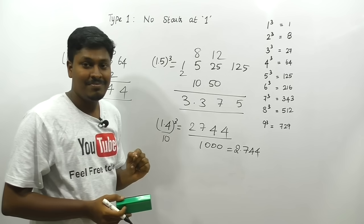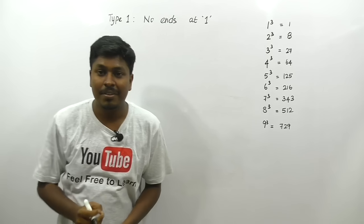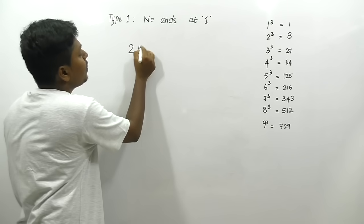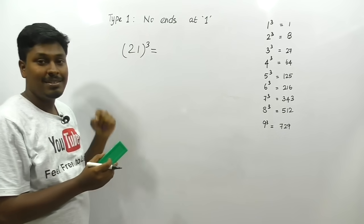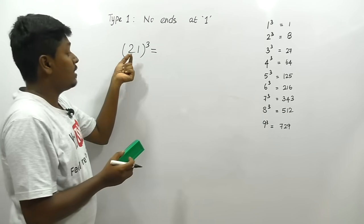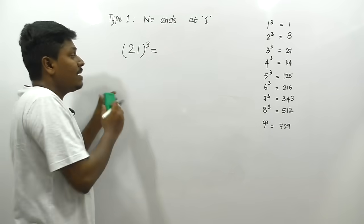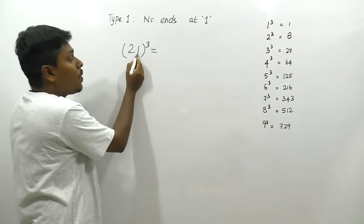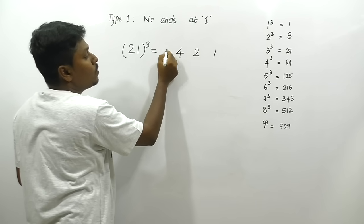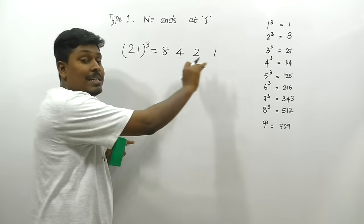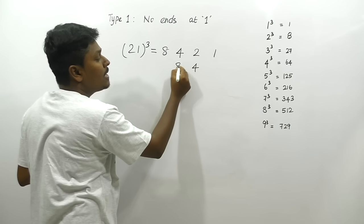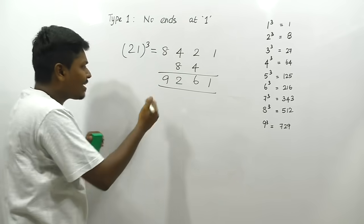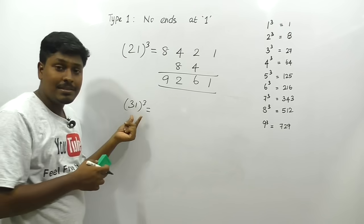Now Type 2 — numbers ending in 1. For 21³: instead of writing left to right, write from the right-hand side — 1, 2. Then 2² = 4, 2³ = 8. Leave the first and last digits, double the center two: double 2 = 4, double 4 = 8. So: 1, 4+2=6, 8+4=12 → carry 1, so 9 with carry. Answer: 21³ = 9261.